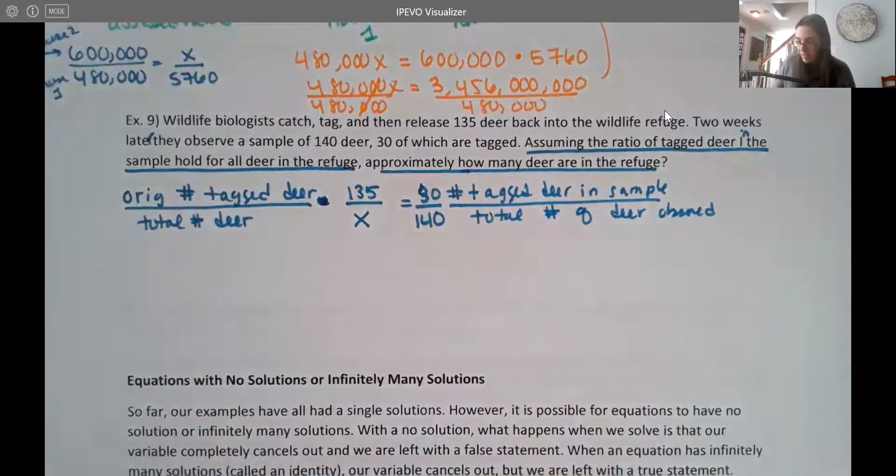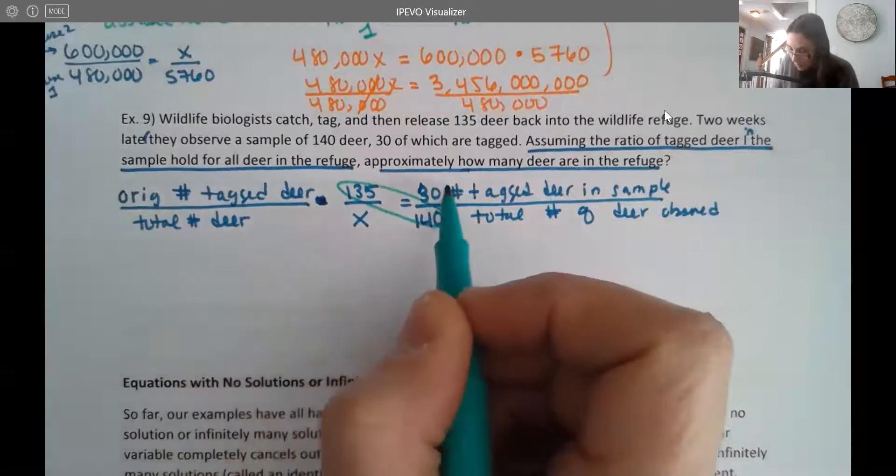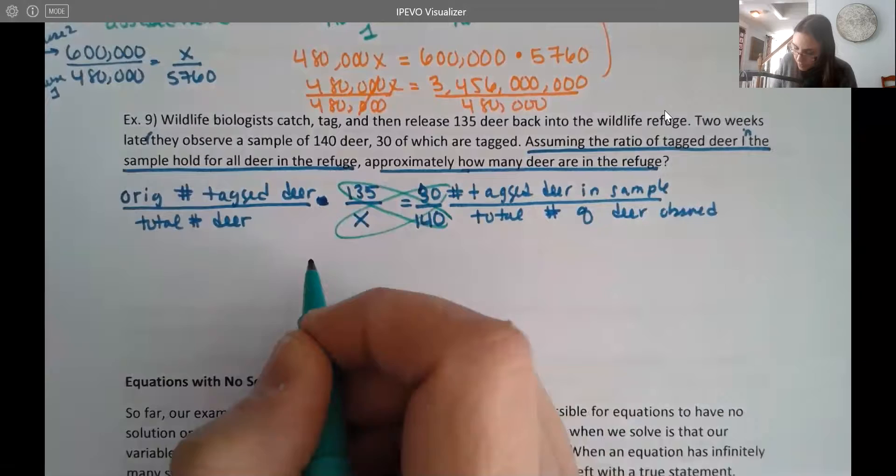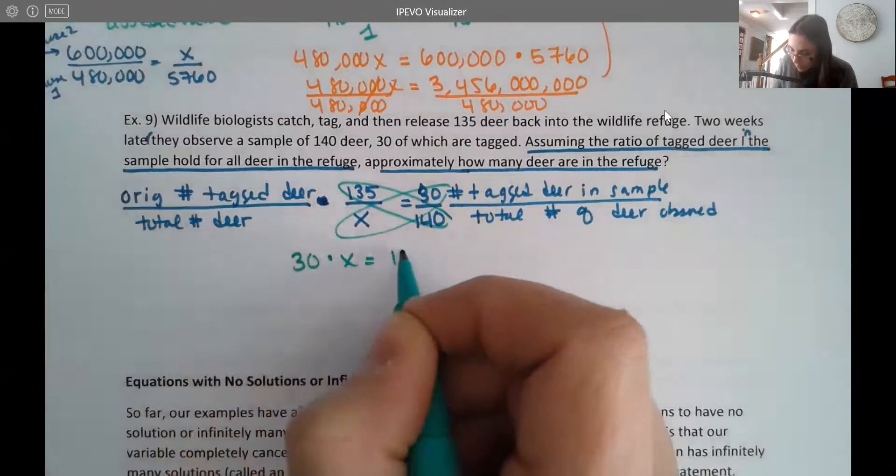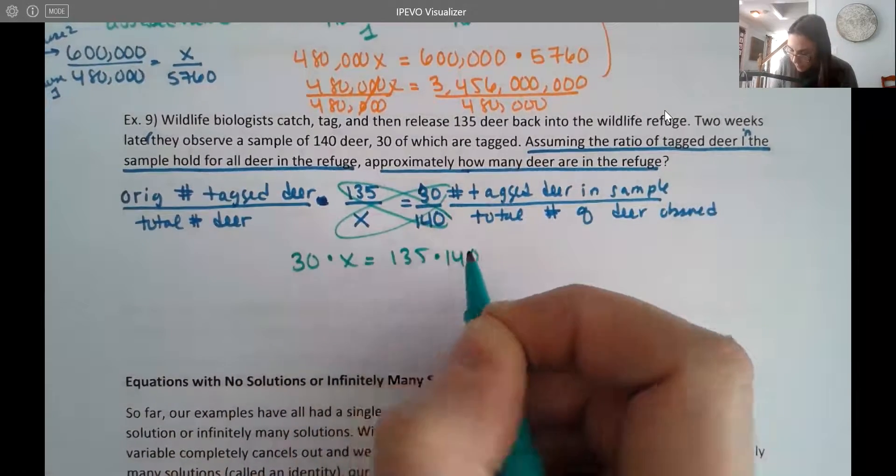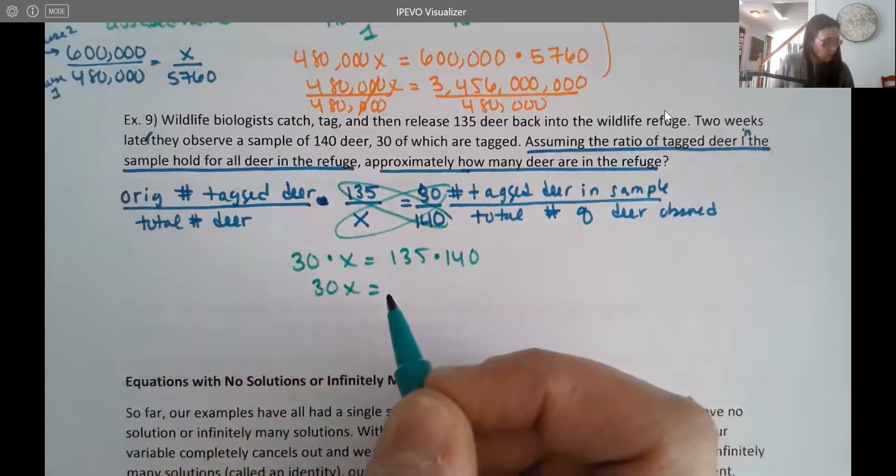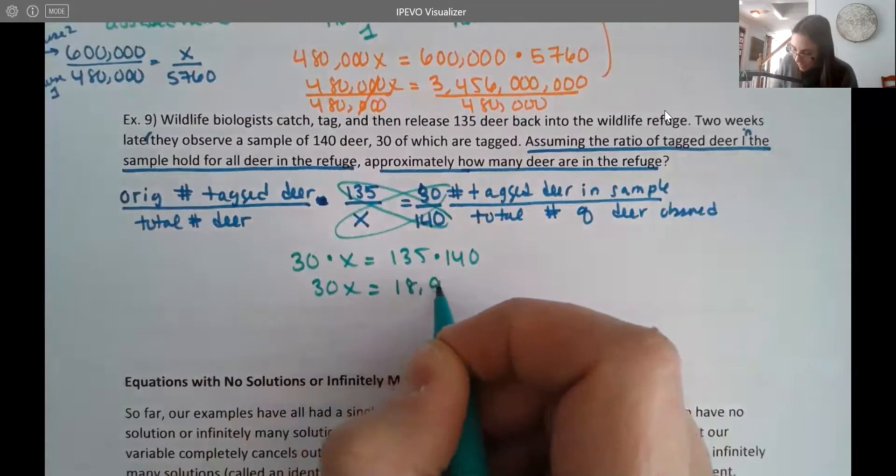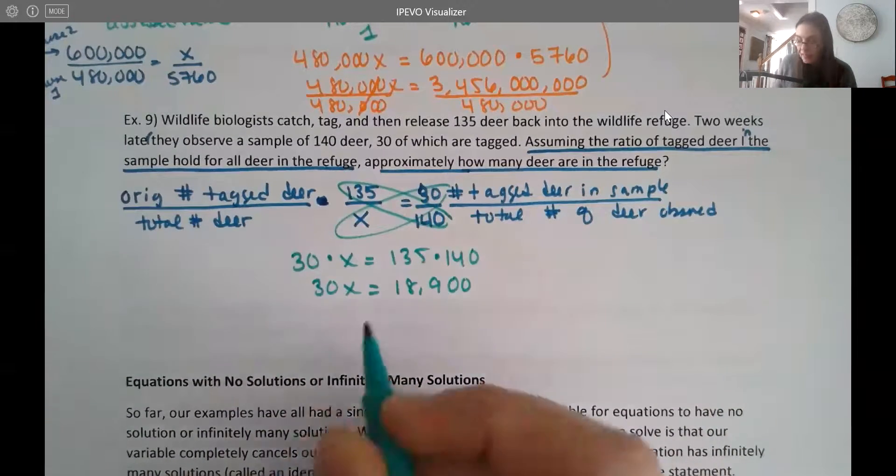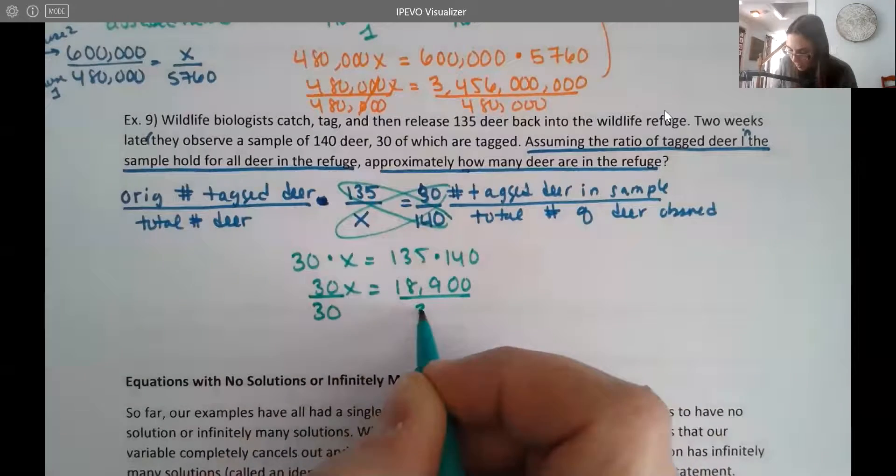Now we can go ahead and multiply that through by cross multiplying. So I have 30 times X, and 135 times 140. 30X equals now 135 times 140 is 18,900. And to solve, we're going to go ahead and divide by 30.